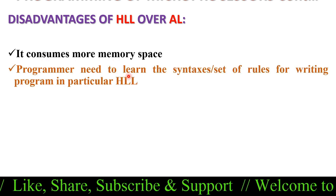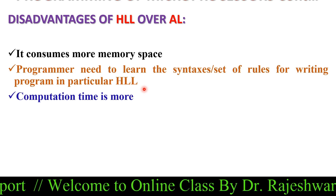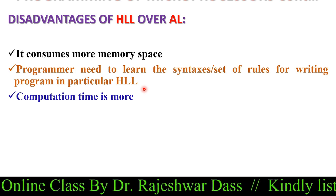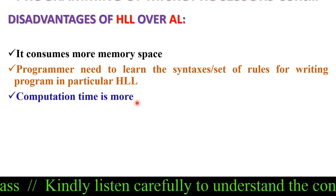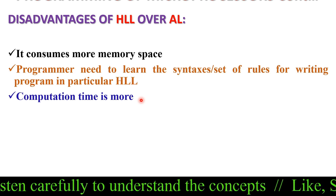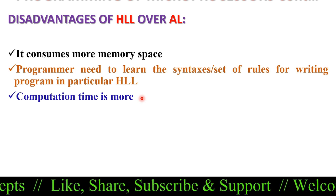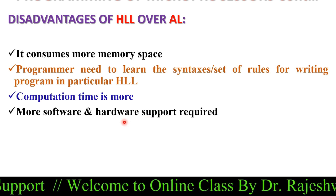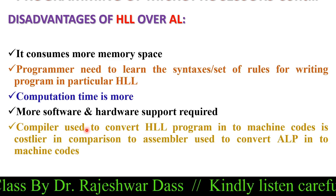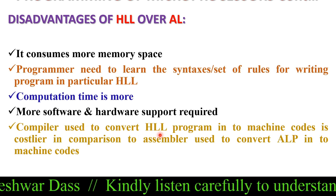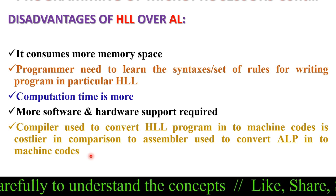Programmers need to learn the syntax and rules for writing programs in a particular high level language — for example, if a programmer wants to write in Fortran, they must learn that language. Computation time is more because all statements written in high level languages are converted into machine codes. More software and hardware support is required, and the compiler used to convert high level language into machine code is costlier than the assembler used for assembly language.